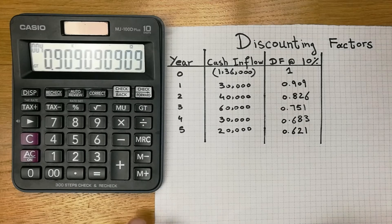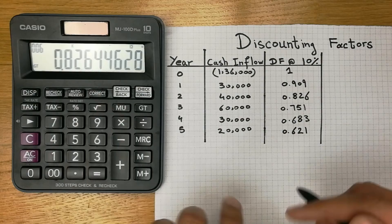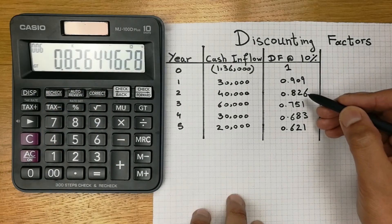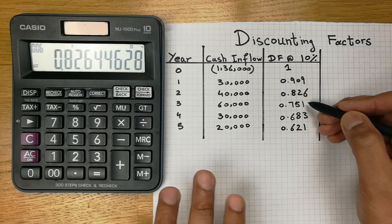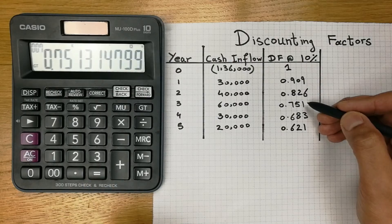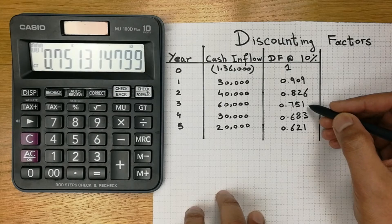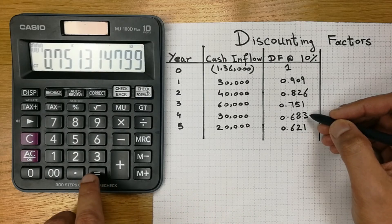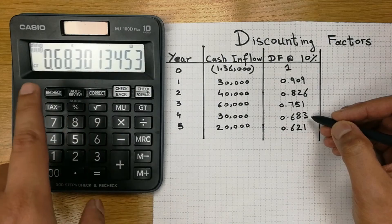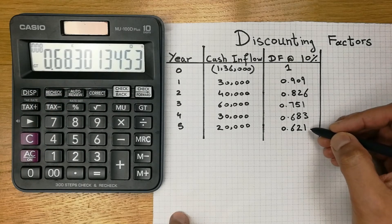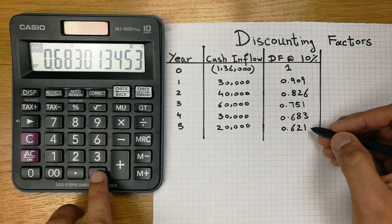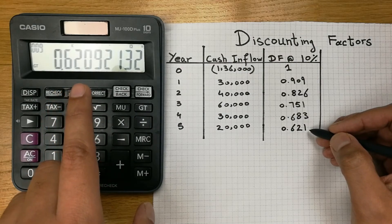Now just press the equal button and you will get the discount factor for the next year, which is 0.826. For the following year, press equals again and the answer is 0.751. For the fourth year, press equals and you get 0.68. For year five, press equals and you get 0.621.